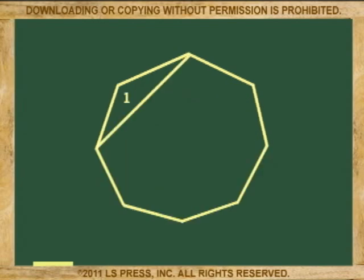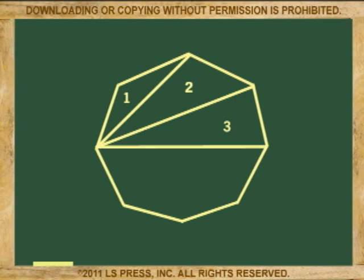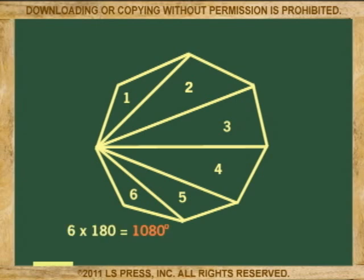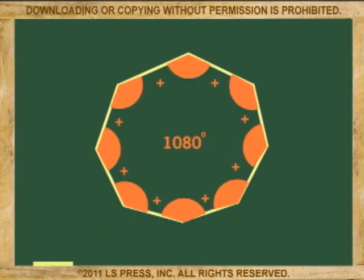What about an eight-sided figure? One, two, three, four, five, six. Six triangles. Six times 180 equals 1080. The sum of all the angles of an eight-sided figure is 1080 degrees.